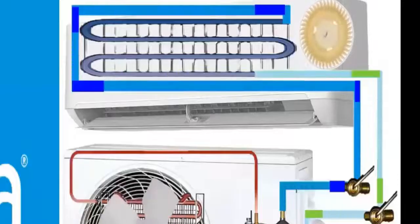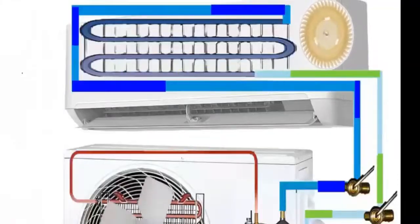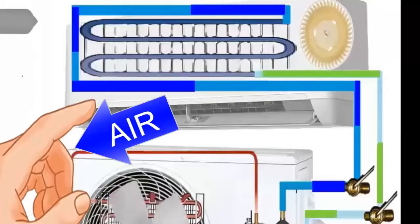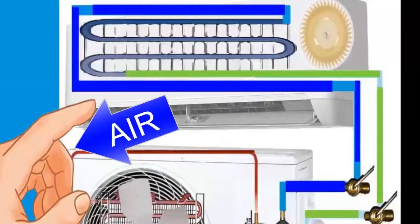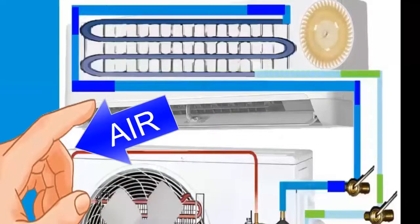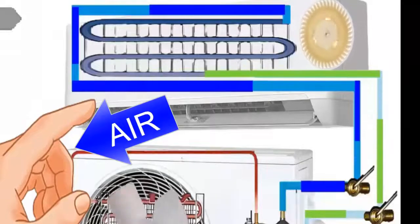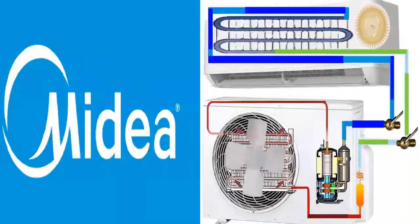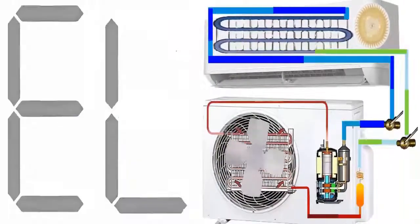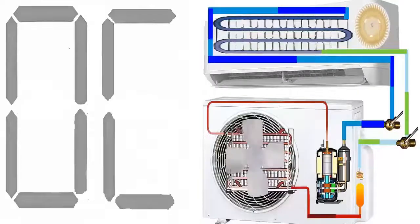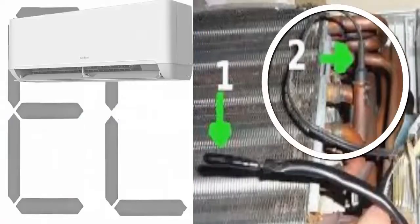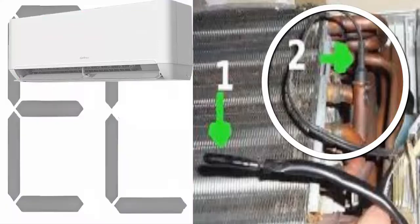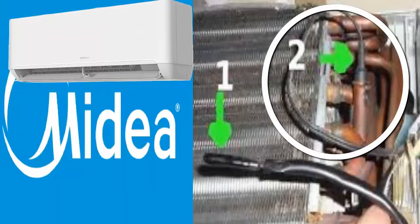Step 3: If the air coming out is sufficiently cold, there is probably no refrigerant gas leak, and the issue might be a false alarm. Step 4: To identify the cause of a possible false alarm, focus your diagnosis on the temperature sensor located on the coil of the indoor unit, known as the well sensor or evaporator sensor.